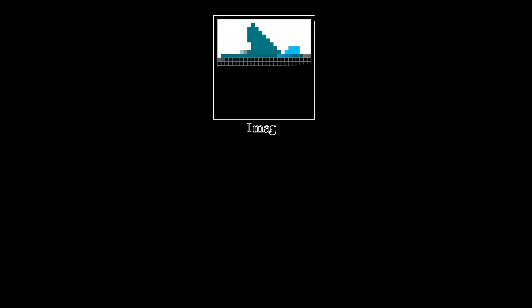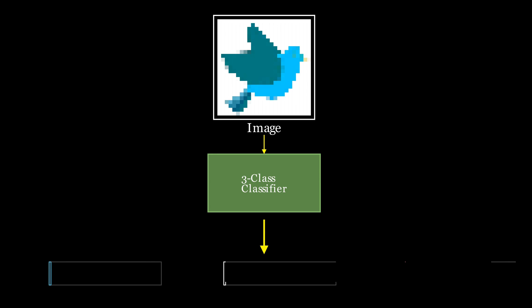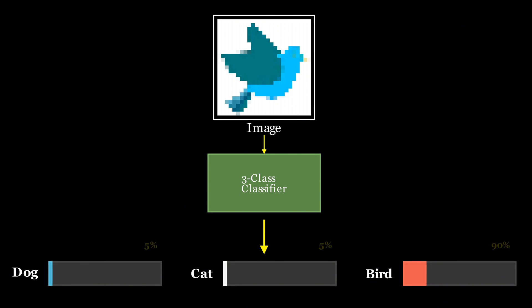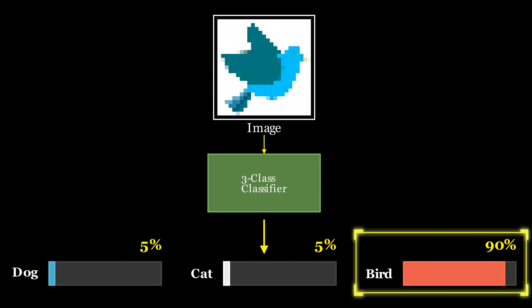Imagine now you're working on a machine learning problem. You're given an image, and your model must decide whether it's a cat, a dog, or a bird. So your classifier needs to distinguish between three classes. In multinomial logistic regression, our goal is to assign a probability to each of those classes. For example, maybe the model predicts 5% chance it's a dog, 5% chance it's a cat, and 90% chance it's a bird. We'd pick the class with the highest probability bird as the final prediction.